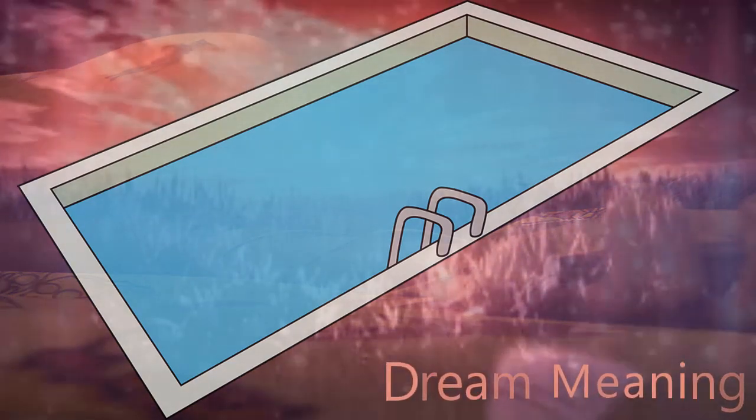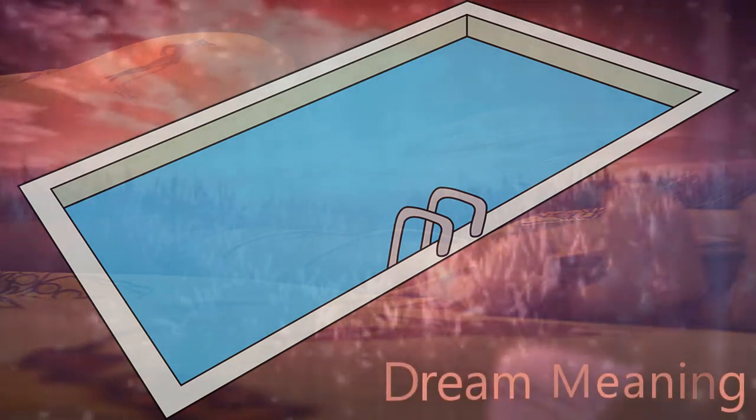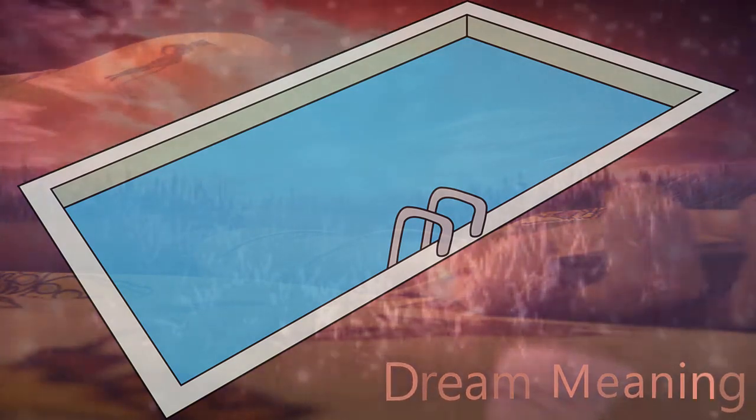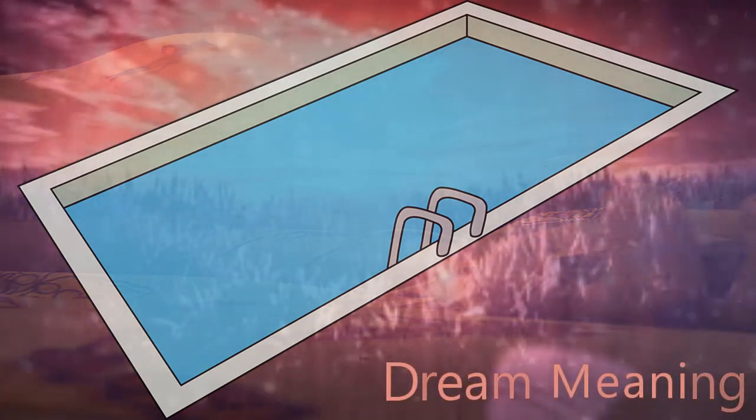To see that there are also fish in the swimming pool you plunge into in your dream denotes that there are people who want to drive a wedge between you and your friends.